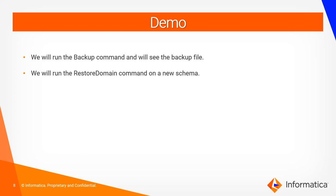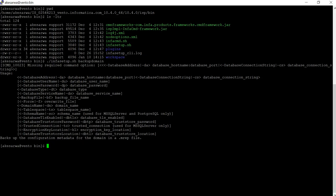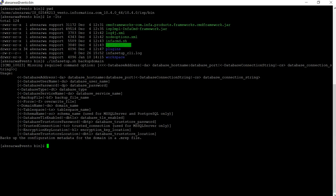Now we will proceed to the demo session. In the demo session, we will run the backup domain command, see the file that gets generated, and then restore the domain. This is Informatica 10.4, which is the latest version of Informatica PowerCenter. We are in the isp/bin location where we can see the infosetup.sh file, since this is a Linux operating system.